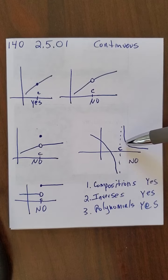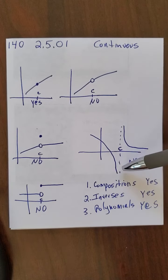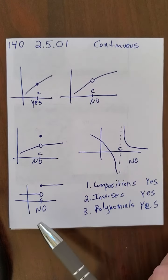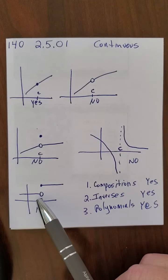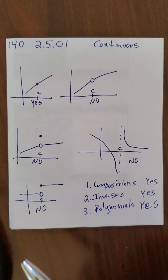This case here, there is no limit. So this is not continuous at the point C. Now, this one is kind of interesting, because, again, there's no limit, because when I come from the left side, I get one answer, and I come from the right side, I get a different answer.